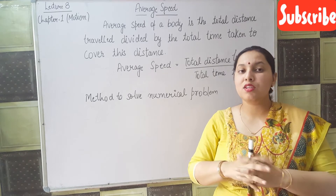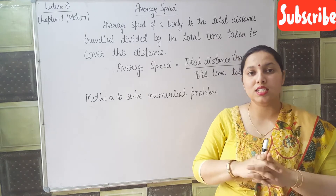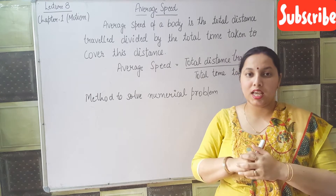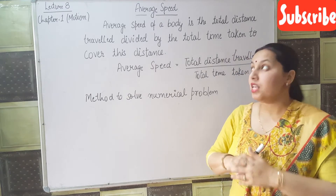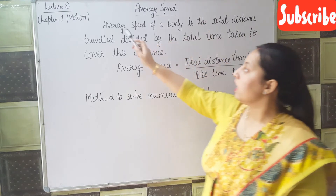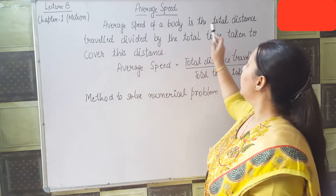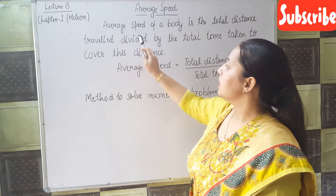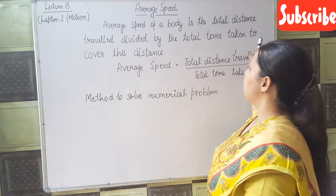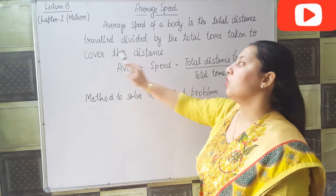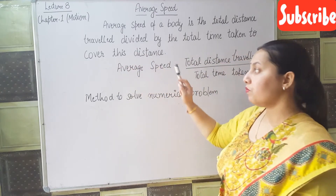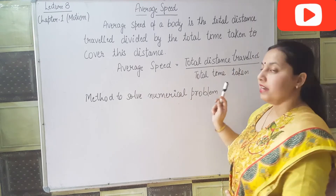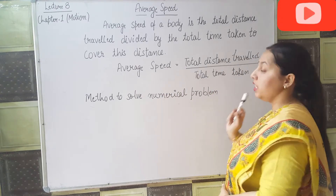So what is average speed? It is the total distance travelled divided by the total time taken. Average speed of a body is the total distance travelled divided by the total time taken to cover that distance.